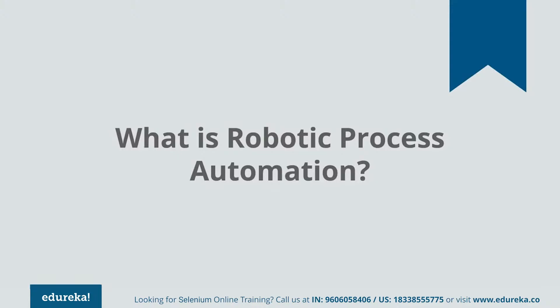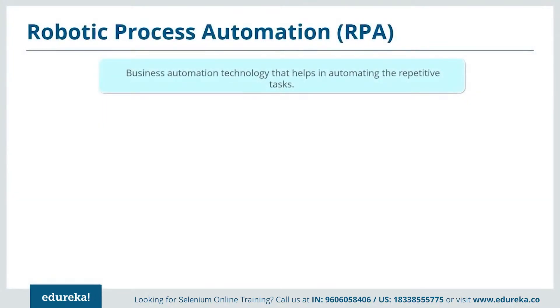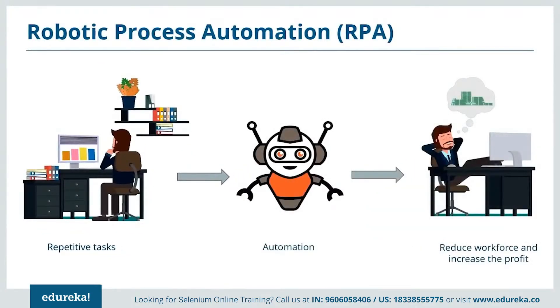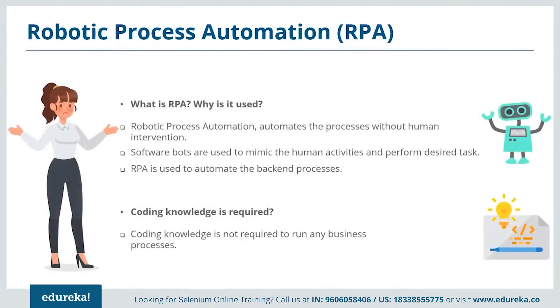Now let's move on to understand what is Robotic Process Automation, commonly called RPA. RPA is a business automation technology used to automate repetitive, time-consuming tasks like data entry and calculations, which decrease productivity and can result in the downfall of an organization. By automating the same tasks, time taken is reduced, productivity increases, and errors are reduced. RPA was coined with the vision of empowering business users to create software bots that interact with systems just like humans — it is a combination of artificial intelligence and automation.